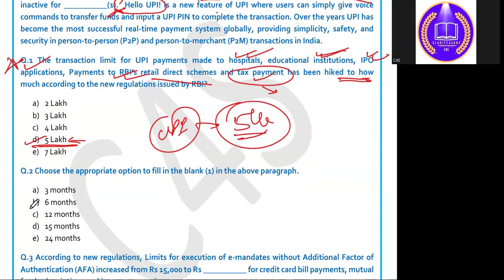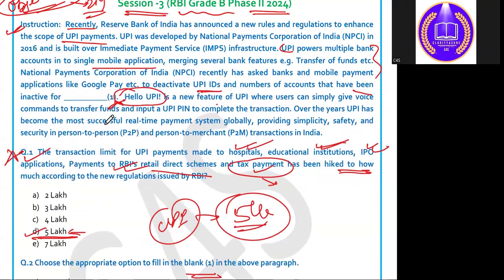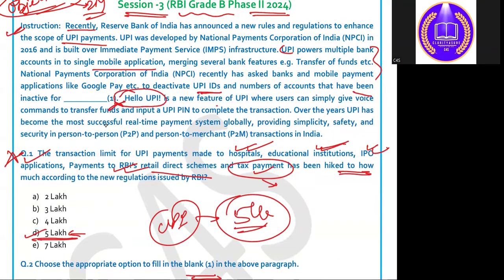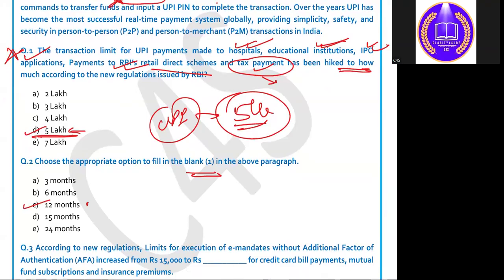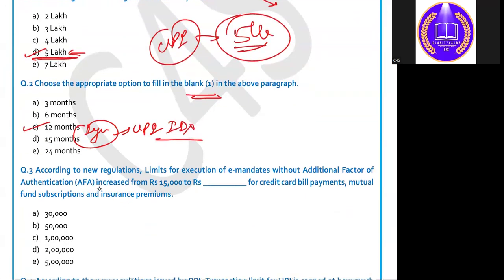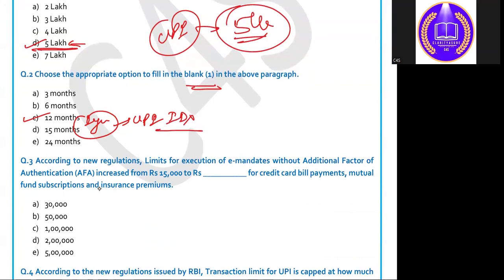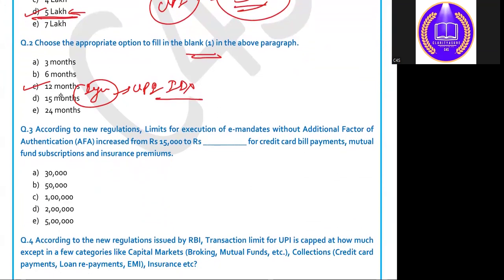Question 2: NPCI had asked banks and mobile payment applications like Google Pay to deactivate UPI IDs and accounts that have not been active for how many months? The answer is 12 months, that is one year. After one year, the UPI ID will be deactivated if you have not made any transaction in the last 12 months.